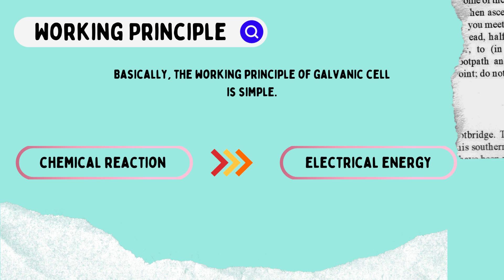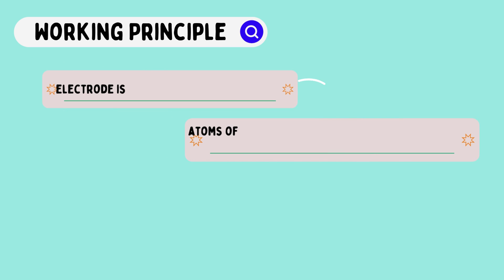Basically, the working principle of this galvanic cell is quite simple. It entails a chemical reaction that produces electrical energy as the final result. Working principle of galvanic cells.